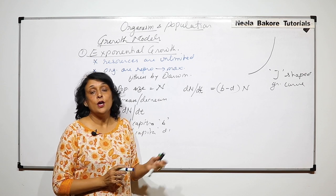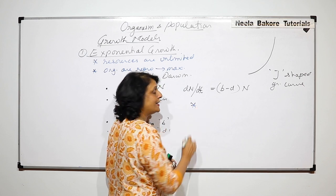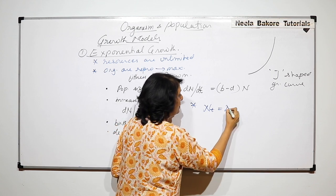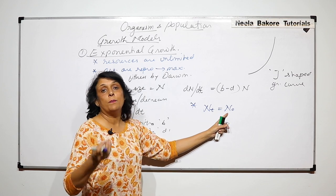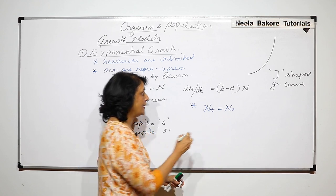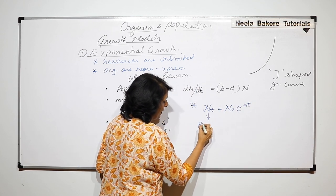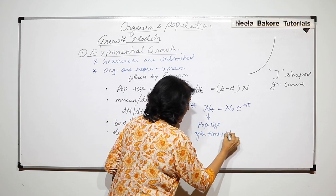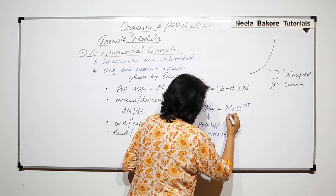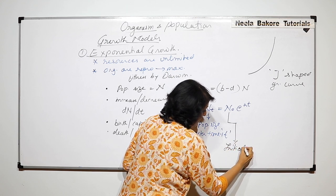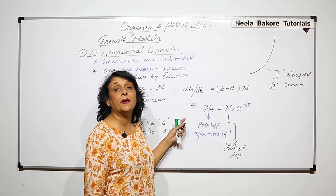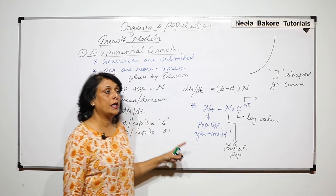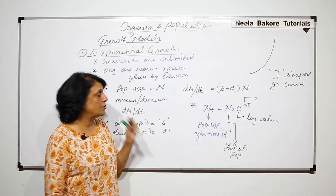If we want to express this mathematically using calculus, the equation is slightly different. It is written as: Nt = N0 · e^(rt), where Nt is the population size after time period t, and N0 is the initial population — the population size at the point when we start.